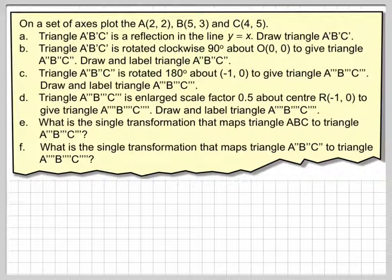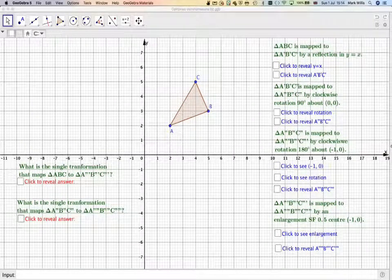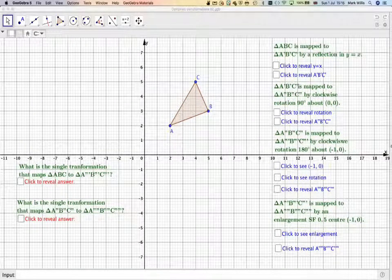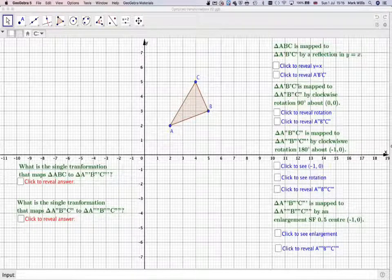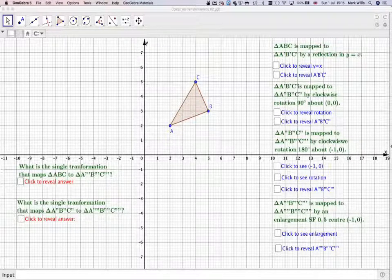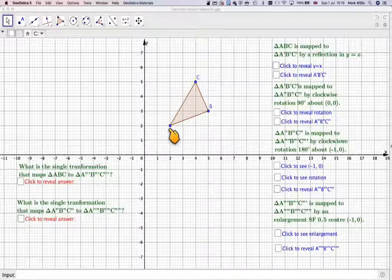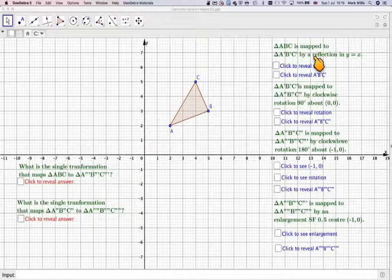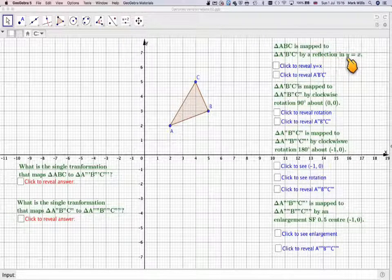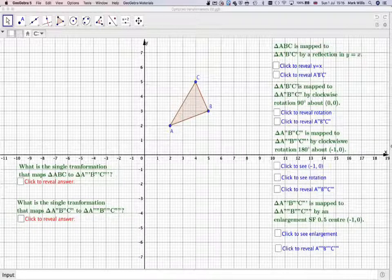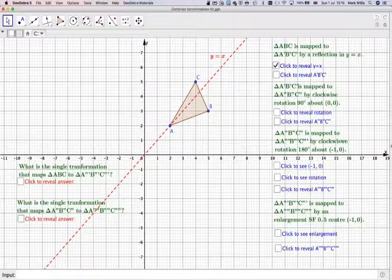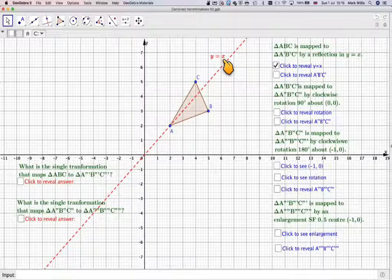To do this question, I've got a GeoGebra applet, and the applet I will put in the notes of the video, the link to it, so that you can look for yourselves. We've got here plotted the points A, B, C. Labelling the points is going to be very important. The first one was to reflect in the line Y equals X. Drawing on the line Y equals X, you should draw it on with a dotted line and make sure that you've labelled it.